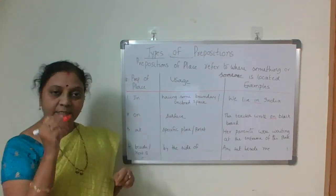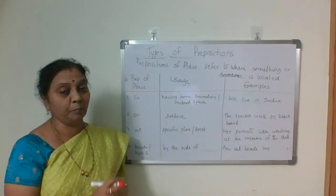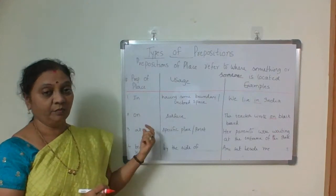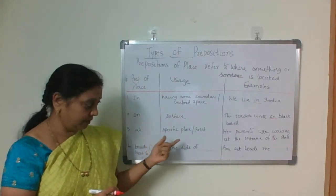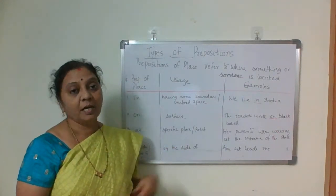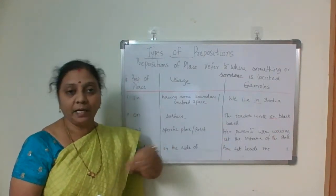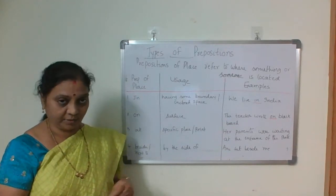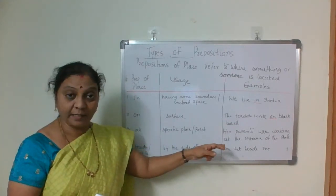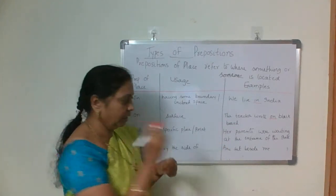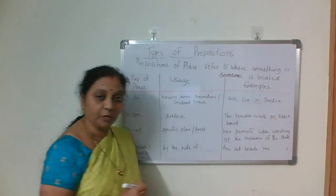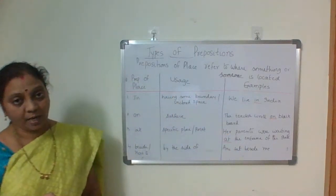'At' is used for a specific place or specific point. For example: 'Her parents were waiting at the entrance of the gate.' — at the entrance. So for a specific place or point, we use 'at'.